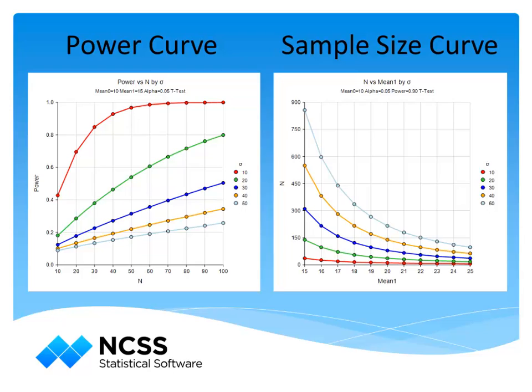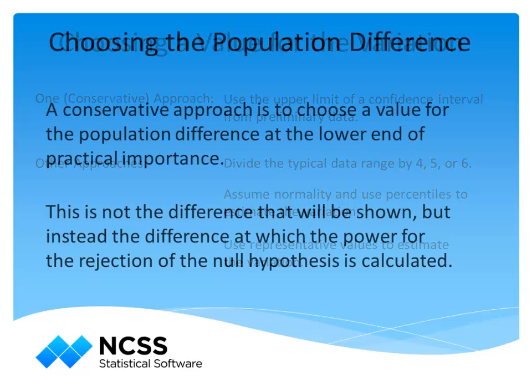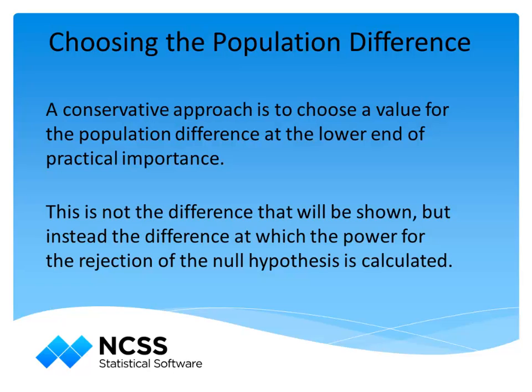In the end, a single sample size needs to be determined, requiring a specific population difference and variation to be chosen. A reasonable approach for the variation parameter is to use a preliminary or similar study to obtain a confidence interval estimate of the variation, and to use a value near the upper limit of that interval to be conservative. For the population parameter difference, a common approach is to choose a difference at the lower end of practical importance. It should be noted that the test will be powered only to reject the null hypothesis and conclude inequality — not to show that the difference equals the specified practical difference. This is a common misconception, and a superiority-by-a-margin test procedure should be used instead if that is the goal.